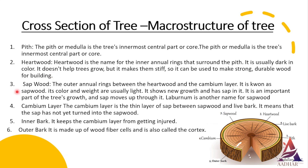Number three: sapwood. The outer annual rings between heartwood and cambium layer are known as sapwood. It is usually light in color and weight. It indicates recent growth and contains sap. It takes an active part in the growth of the tree and sap moves in an upward direction through it. Sapwood is also known as laburnum. Number four: cambium layer. The thin layer of sap between sapwood and inner bark is known as the cambium layer. It indicates sap which has yet not been converted into sapwood.